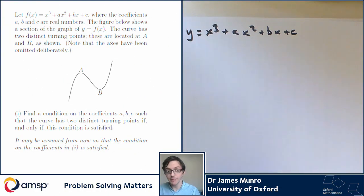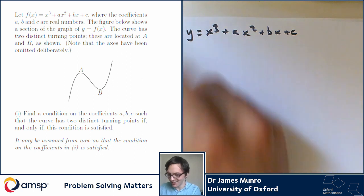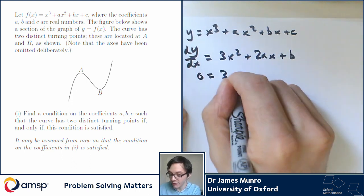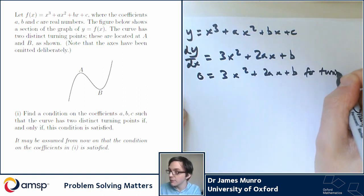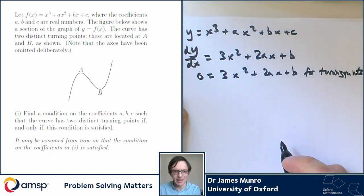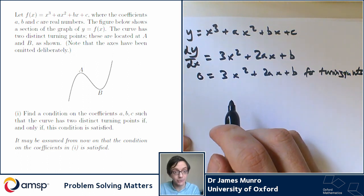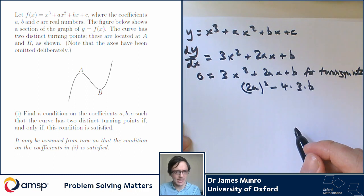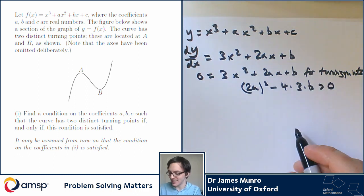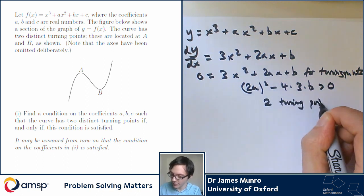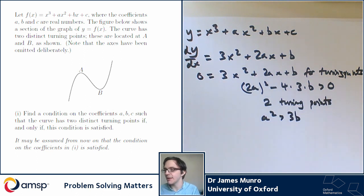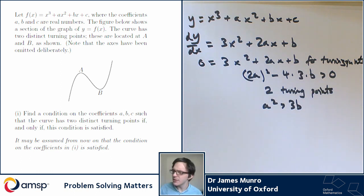We've been given the equation for the cubic, and we've been asked to find a condition on its coefficients so that it's got exactly two turning points. My plan is to find its turning points and then count how many I've got. So dy/dx is 3x squared plus 2ax plus b, and for a turning point I want that to be zero. This has got exactly two roots when the discriminant of this quadratic is positive. The discriminant here is b squared minus 4ac — where a isn't a, b isn't b, and c isn't c — and I want this to be positive to have exactly two roots.